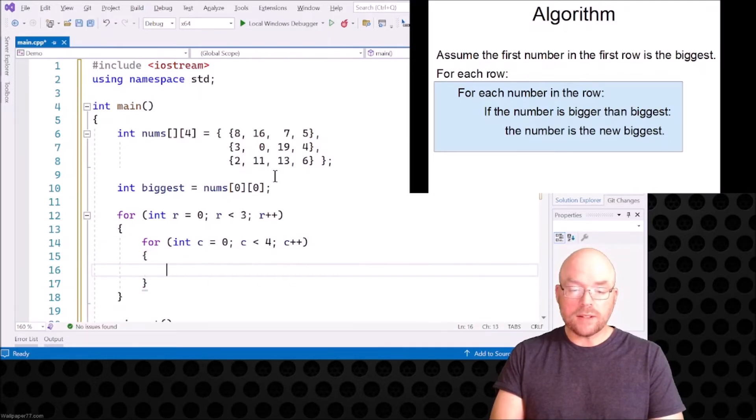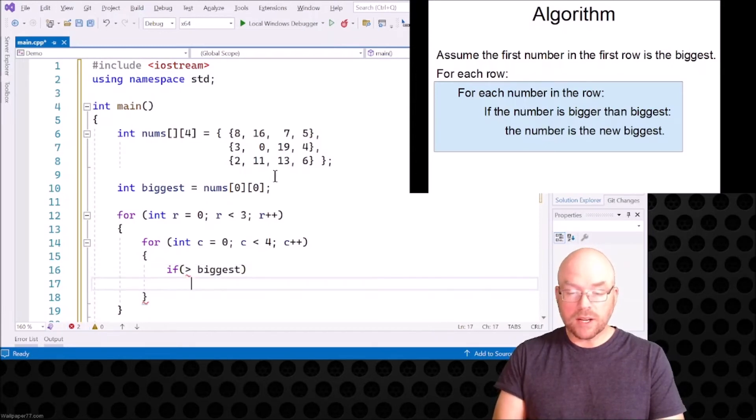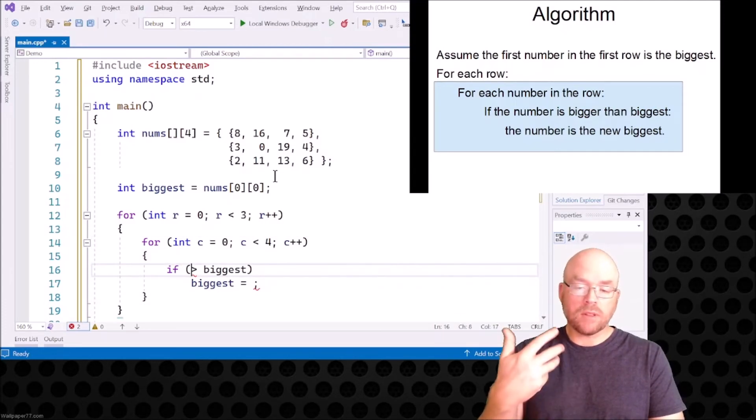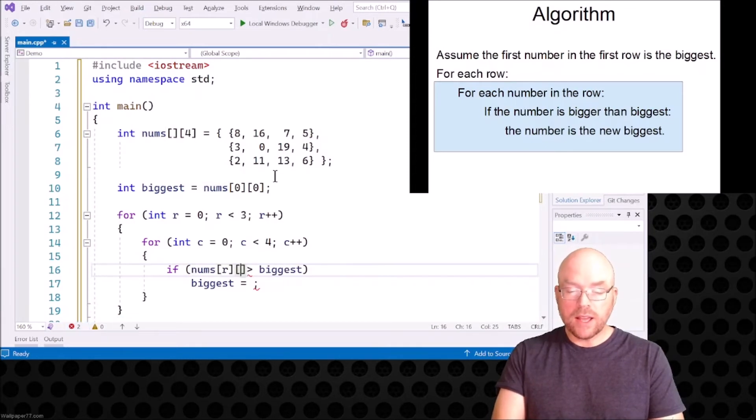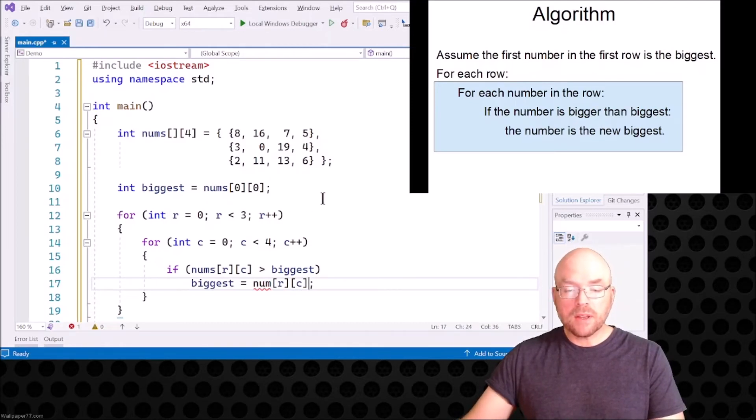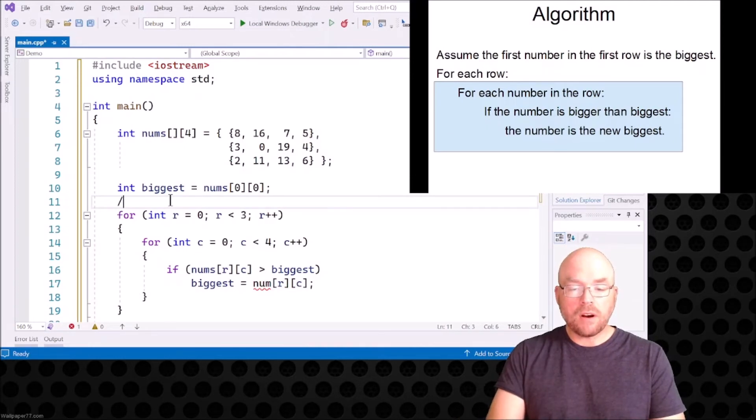So then from there, what was in the inside of that inner loop? What we had is we had a test. If the number is bigger than biggest, then what do we do? Then biggest becomes that new number. What is that number? It's going to be whatever is in the rth row in the cth column. So we're going to say if nums r and then c is greater than biggest, then biggest equals nums r c.